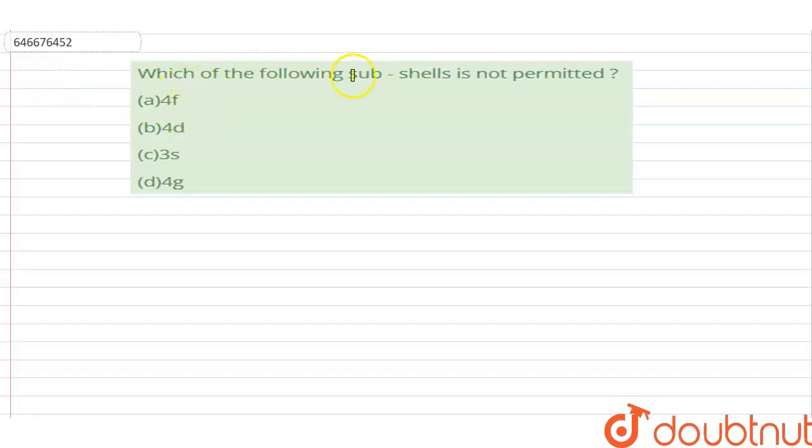The question asks which of the following subshells is not permitted. These subshells are permitted according to azimuthal quantum number. According to azimuthal quantum number, if the value of n is 4, for instance, the value of l can be from 0, 1, 2, and 3, but not more than that.